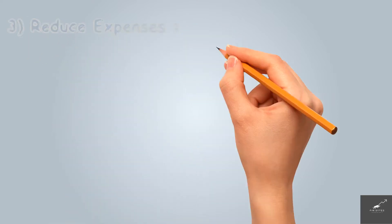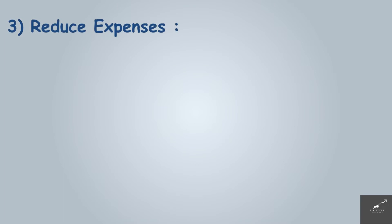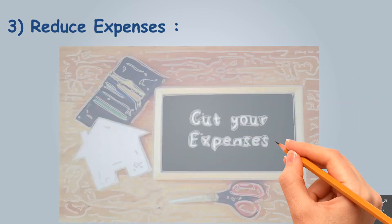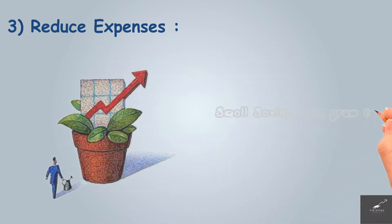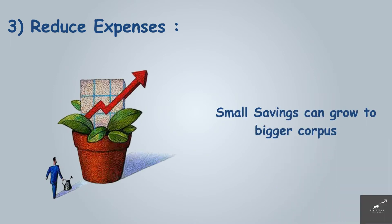Third point: reduce expense. With the help of the previous step, we will look into our cash flow statement. We can potentially identify some of our unnecessary expenses which we incur every week or month. Saving these little expenses every week or month into equity or index funds for a longer duration can create a huge corpus for us, which will be helpful in future. Saving smaller amounts into equity or index funds for a longer duration is also known as micro investing.